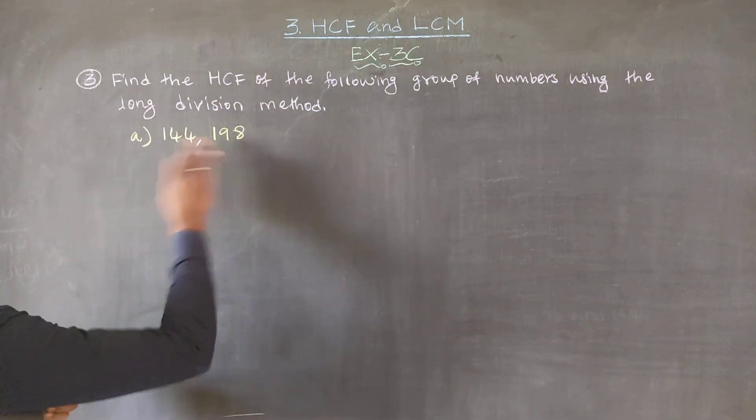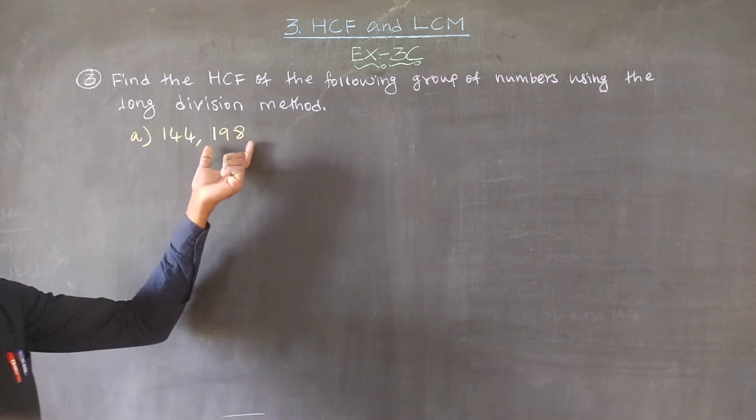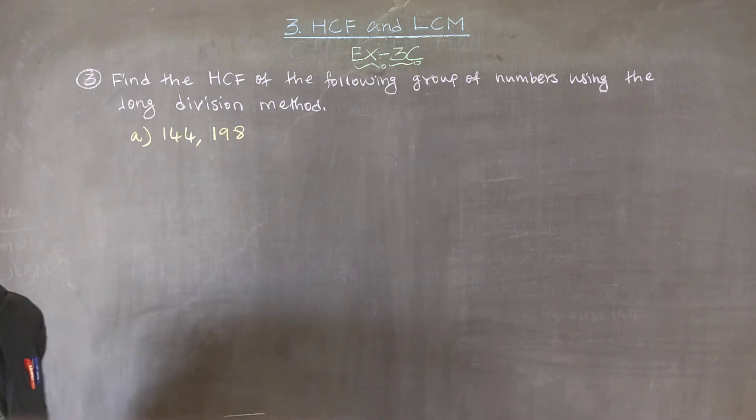In the long division method, we will divide. The biggest number is divided, the smallest number is the divisor.